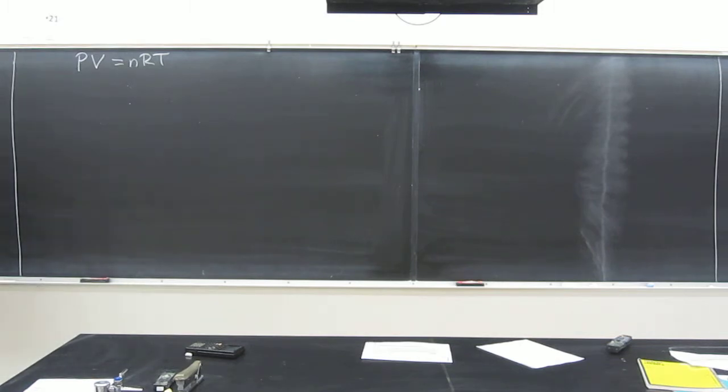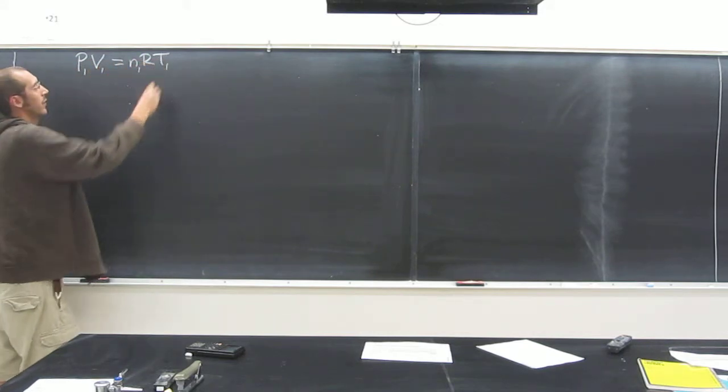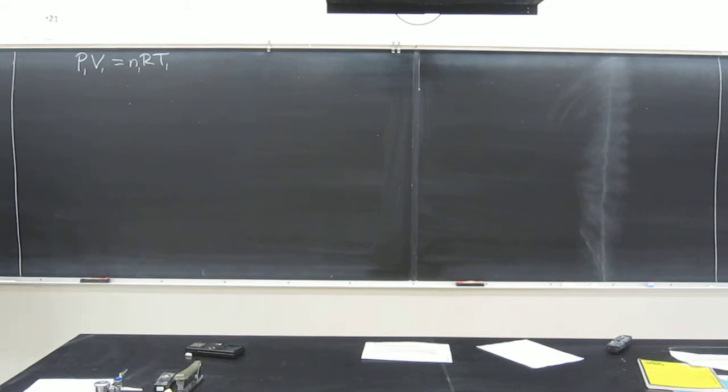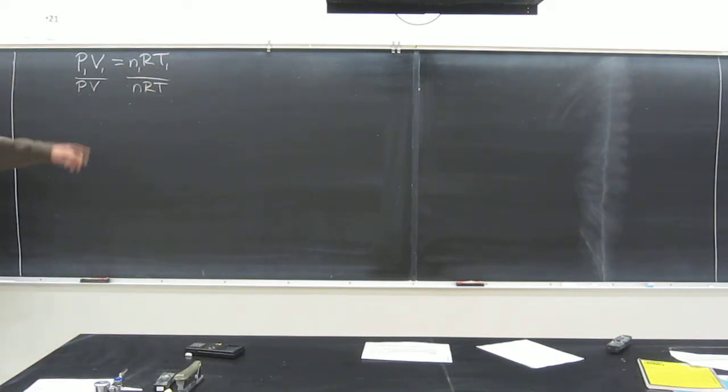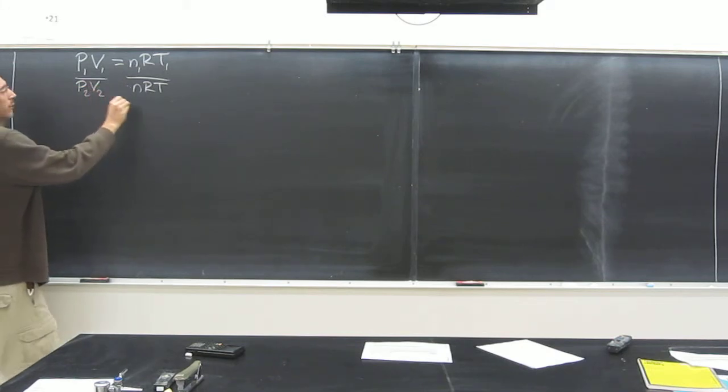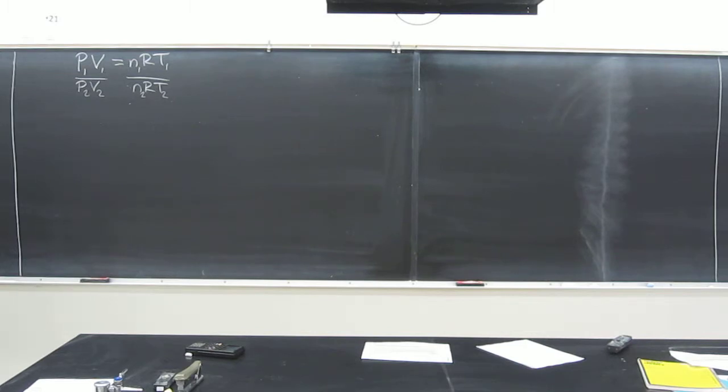Whenever you're doing one of these gas law problems, I want you to write down PV equals nRT, and then write little ones, or if you like initial, you can write little i's below them. And then I want you to divide both sides by PV equals nRT and put little 2's below those. Notice I didn't put anything below the R. Why is that? It's a constant, it doesn't change. So what am I going to do with it? I'm going to cancel it out.